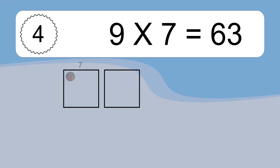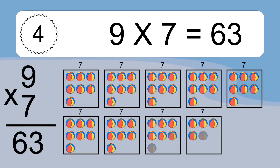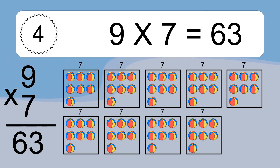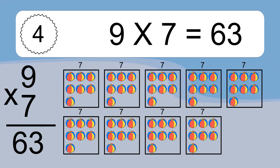This equals 42 balls. 9 times 7 equals what? 9 times 7 equals 63. We have 9 boxes, and each box has 7 colorful balls inside. If you count all the balls in all the boxes together, you will have 9 times 7 balls. This equals 63 balls.